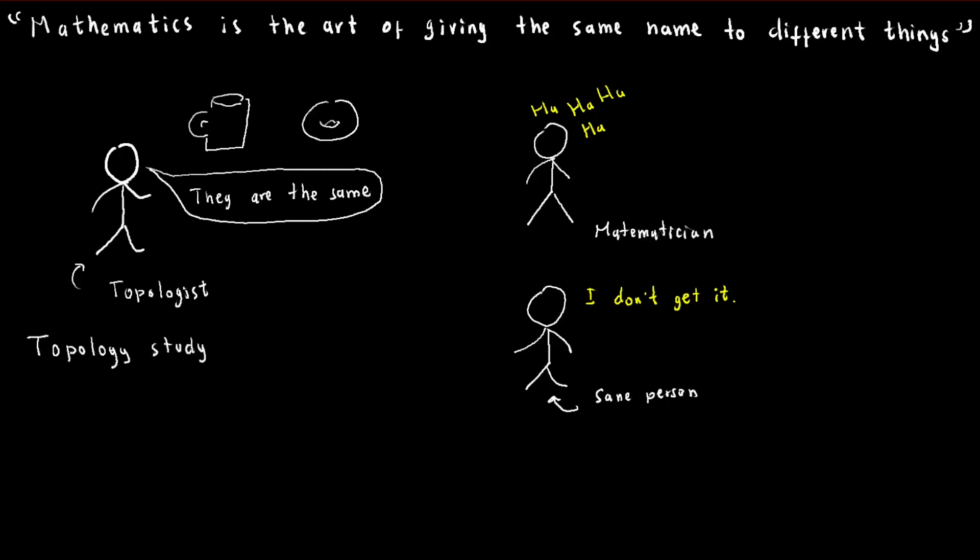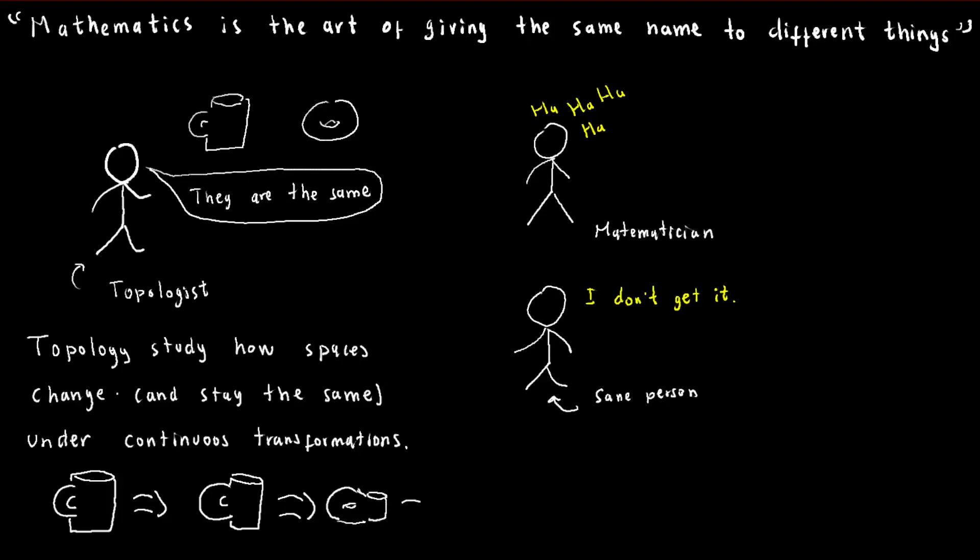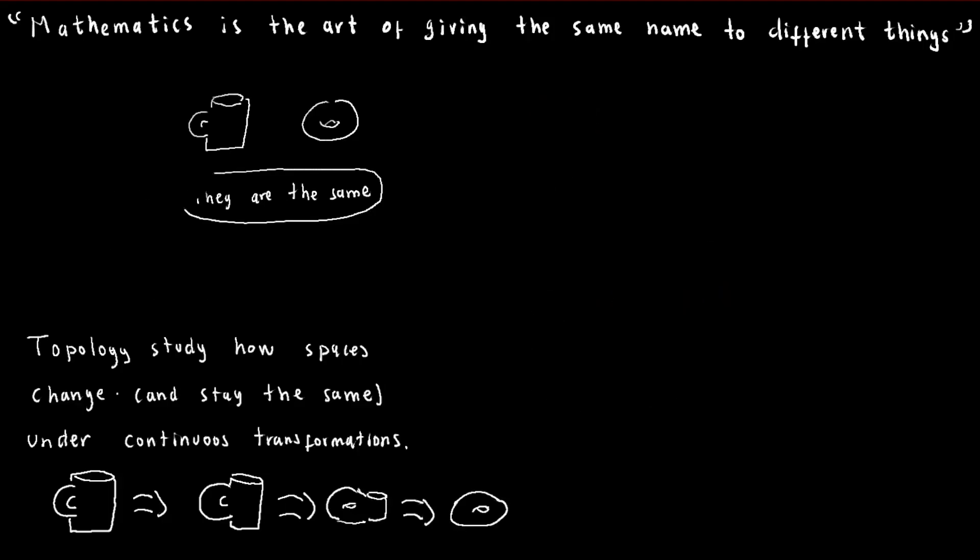But the joke is actually quite insightful because topologists are interested in studying continuous transformations. And since you can smoothly morph a mug into a donut, don't ask us how, these two shapes are considered the same in the topologist's world. This raises the question, what defines sameness between two sets and their continuous transformations?